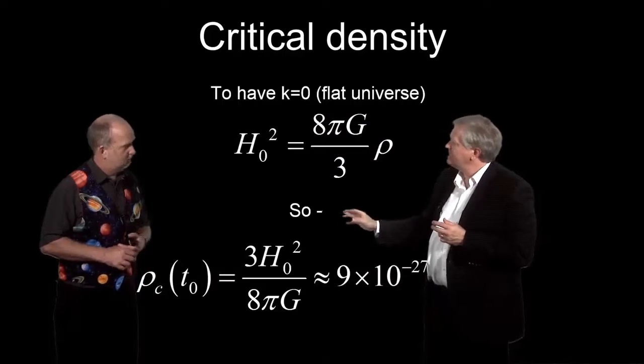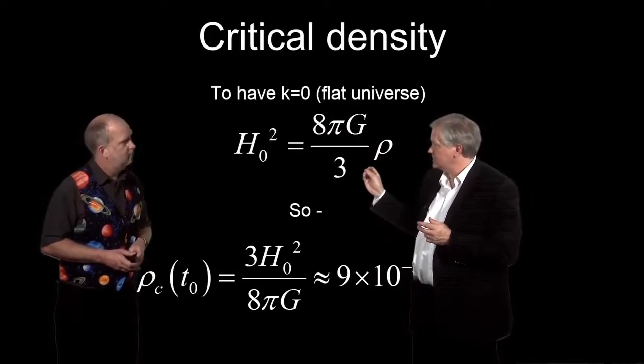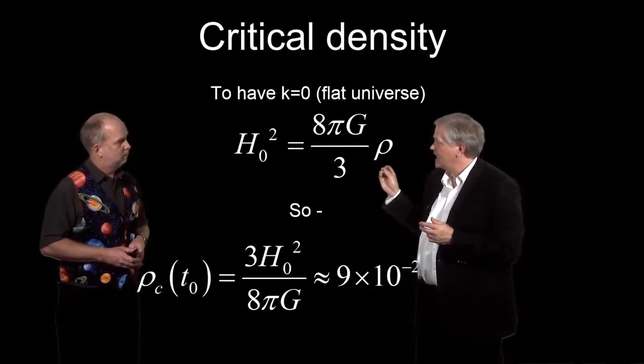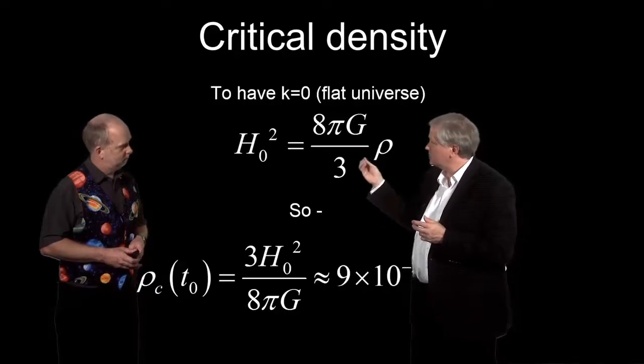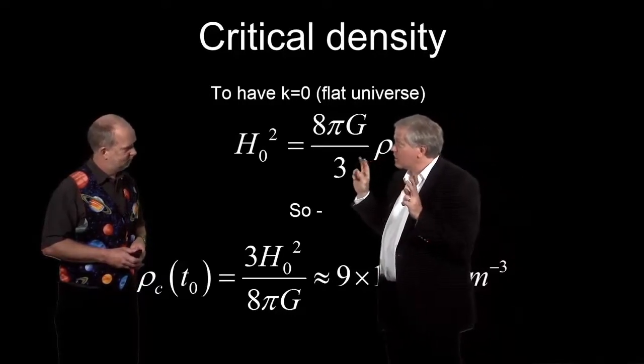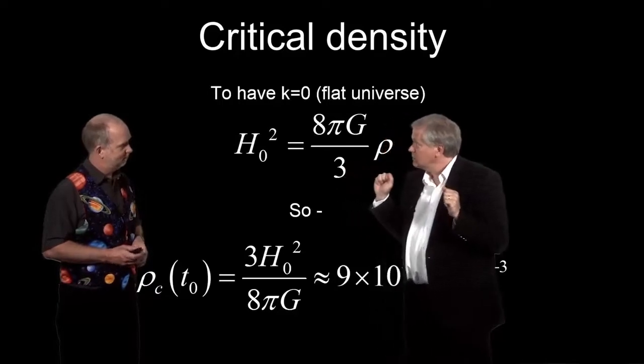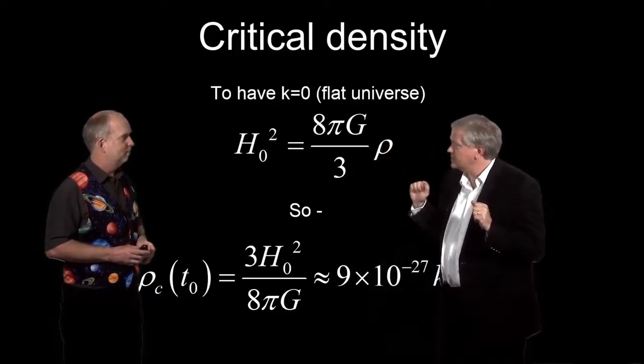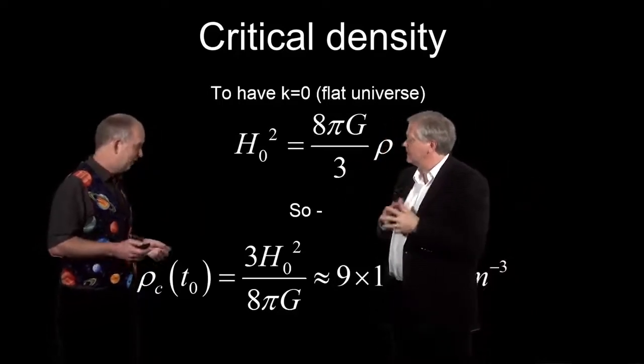So if the density is higher than this, then it turns out that we have a universe that has more than the critical density. k then, instead of being zero, becomes plus one. And if you're below this density, then k has that negative value.